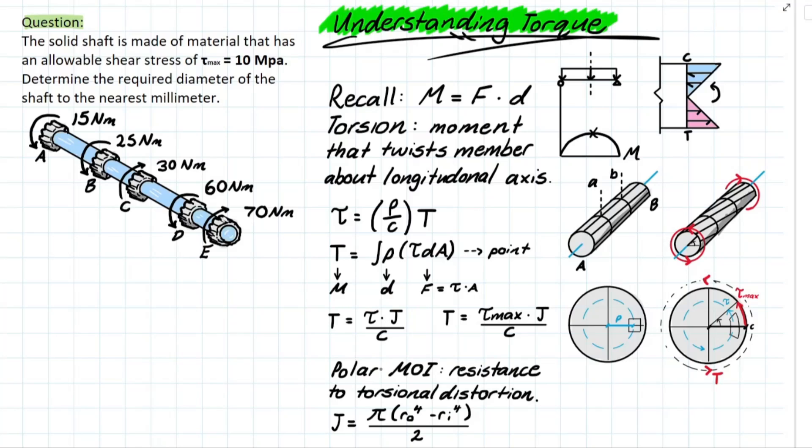It's the polar moment of inertia. What that means, it's the resistance to torsional distortion. This is a unique property of every cross-section. And specifically for circular members, we have J is equal to this formula down here, which is π times r_outside to the 4 minus r_inside to the power of 4.